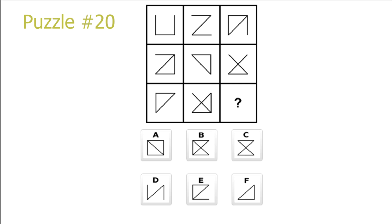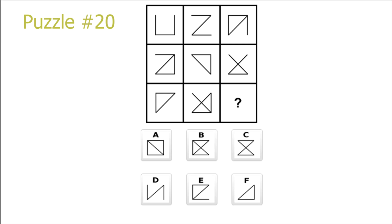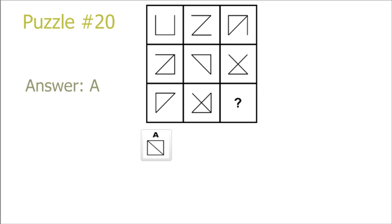Puzzle 20. Here we have a new puzzle. We add two pictures and remove the overlapping line, and that leads to the last picture. This is consistent for both the columns and the rows. So we just add together picture 7 and picture 8, and we get a square which has a line going from the top left to the bottom right corner, which is A.